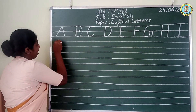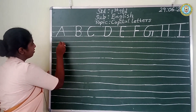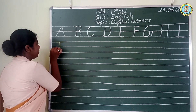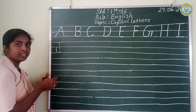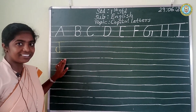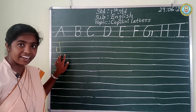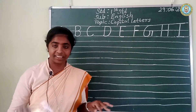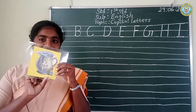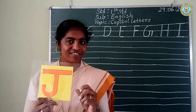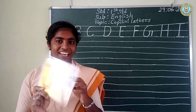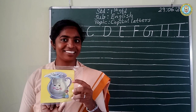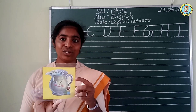Next. J. Slanting line and the straight line. Look at the board. Yes, this is J. J. Repeat after me. J. J for jug. J for jug. Have you all seen a jug in your houses? Yes, we all use a jug.